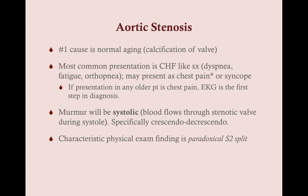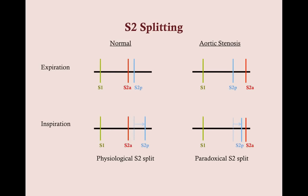A characteristic physical finding in aortic stenosis is the paradoxical S2 split. First, what is an S2 split? Normally, the pulmonary valve closes slightly after the aortic valve. S1 is closure of the mitral and tricuspid valves; S2 is closure of the aortic and pulmonary valves. Normally during expiration the two close at approximately the same time, and during inspiration — when lungs expand with less pressure — more blood flows to the right ventricle, the pulmonary valve closes later, and you hear a split.